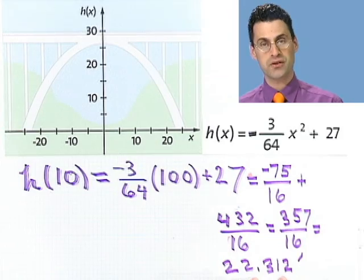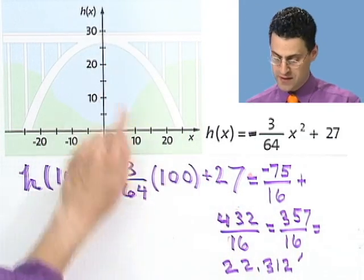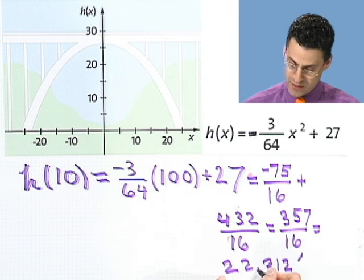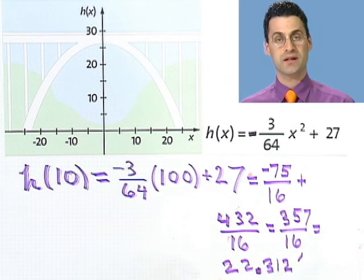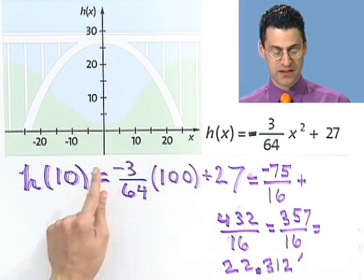So just a little bit over 22 feet. And in fact, that's what we were sort of saying. It just looks like it was a little bit more than 20 feet. So in fact, it's actually 22.312 feet. Great. So to find the height of any particular value, I just plug into the function. Now, to show you sort of a different type of question, let's take a look at this. Now we're asked, how far from the center is the arch 8 feet tall?